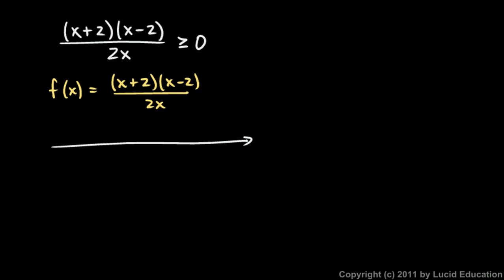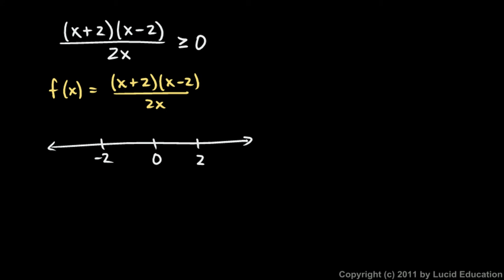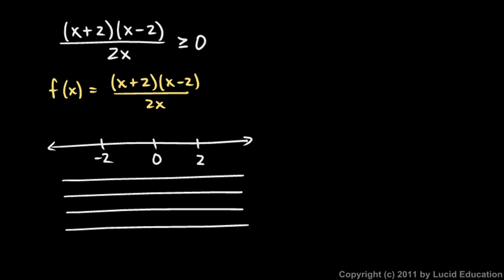I'm going to look at each of those x values — negative 2, 0, and positive 2. Those three x values divide the x-axis into four distinct regions, and I'm going to consider each of the three factors in each of those four regions. I'll set up a little chart, and let's look at x plus 2, x minus 2, and 2x, and see where each is positive or negative.